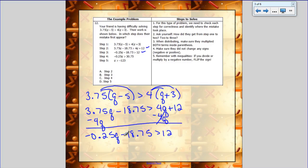So now we're going to move our constant, so we're going to add 18.75 to both sides. And I get negative 0.25Q is greater than 30.75, and so I'm going to look at the next step. Yes, matches mine.